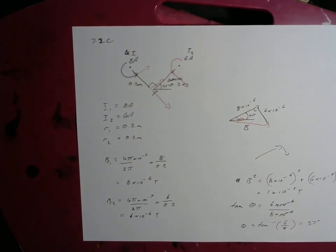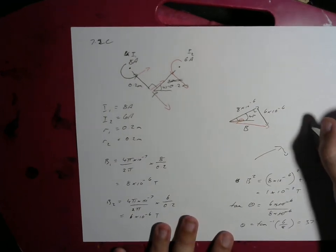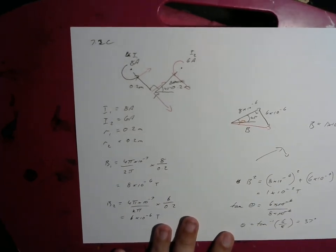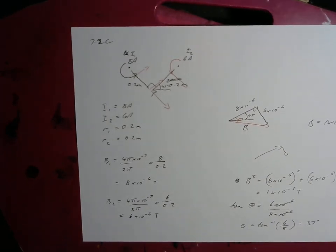Now we have our direction for our force is about 37 degrees. So B equals 1 times 10 to the negative 5 Tesla at east 37 degrees north. That brings us to the end of this video.